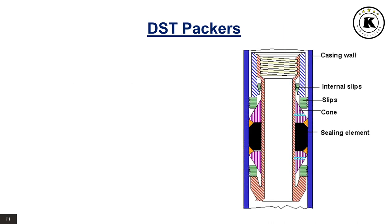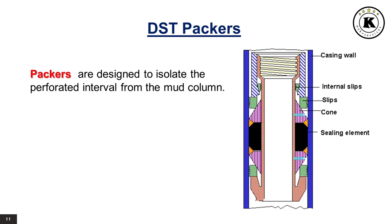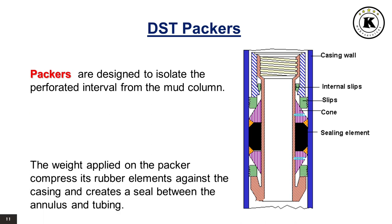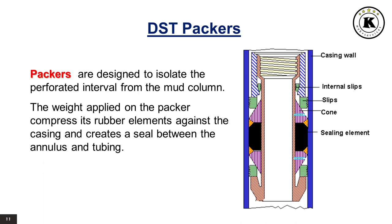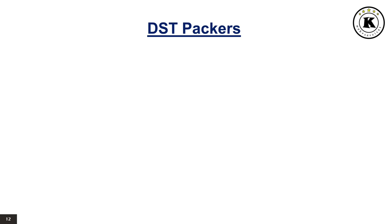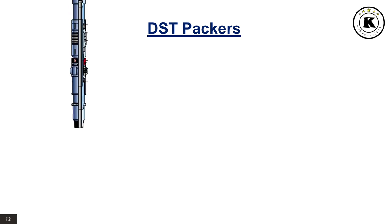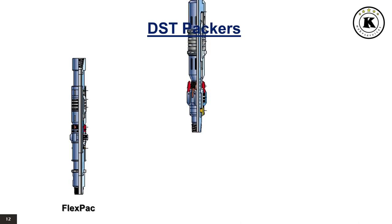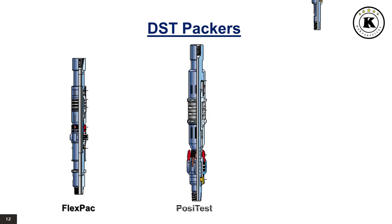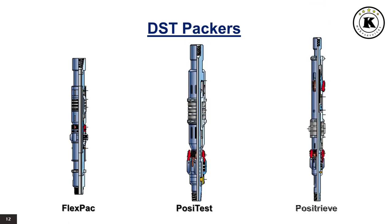DST Packers. Packers are designed to isolate the perforated interval from the mud column. The weight applied on the packer compresses its rubber elements against the casing and creates a seal between the annulus and tubing. Three main types of packers are available: Flex Pack Packer, Posit Packer, and Positive Packer.